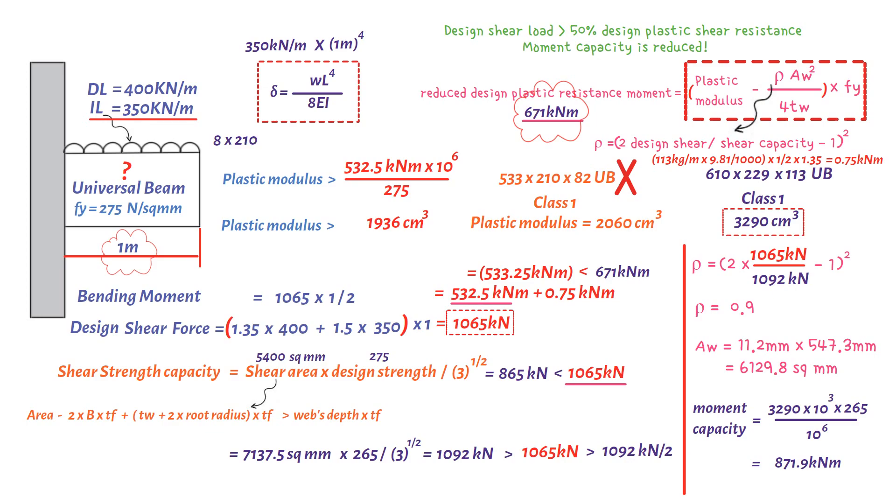Young's modulus equals 210 kilonewtons per square millimeter. We need to be careful with our units here, so we will convert 210 kilonewtons per square millimeter to kilonewtons per square meter, which equals 210 multiplied by 10 to the power of 6.